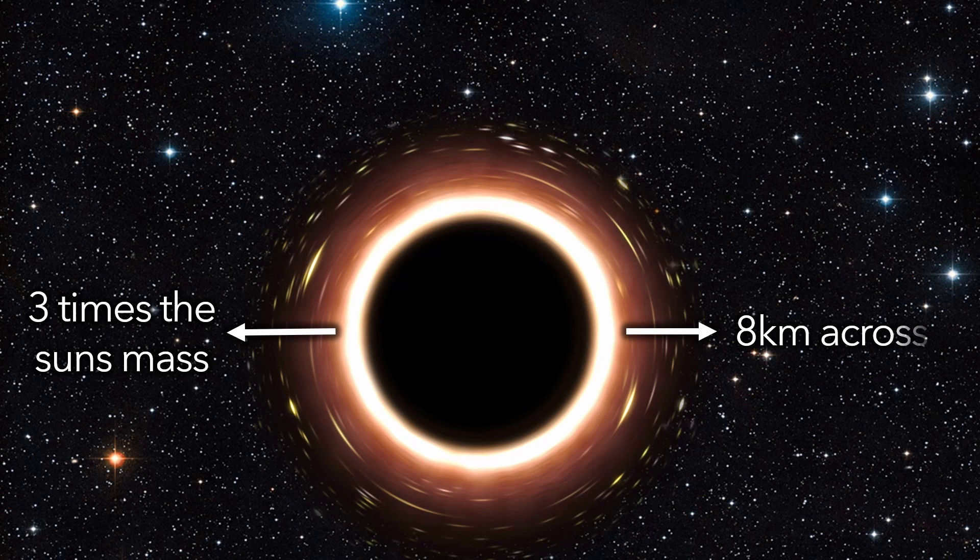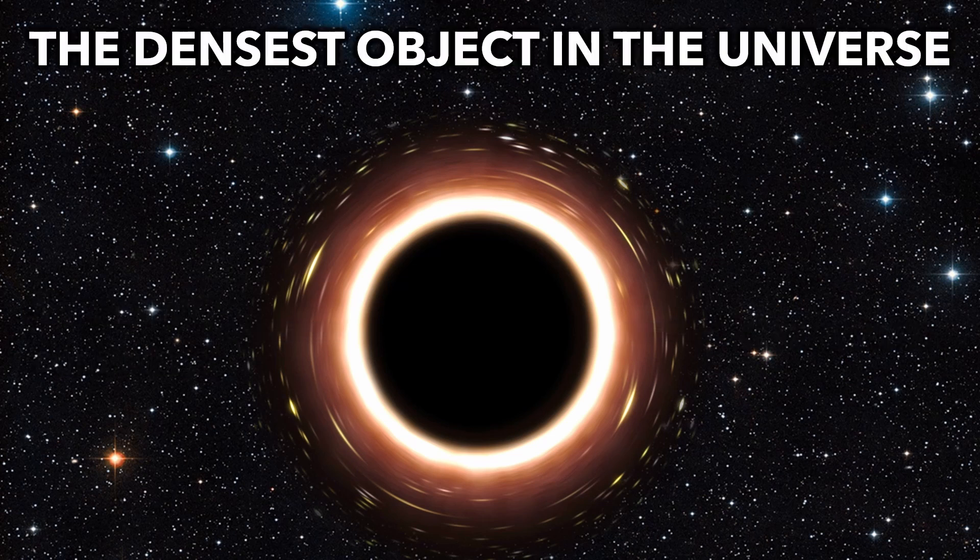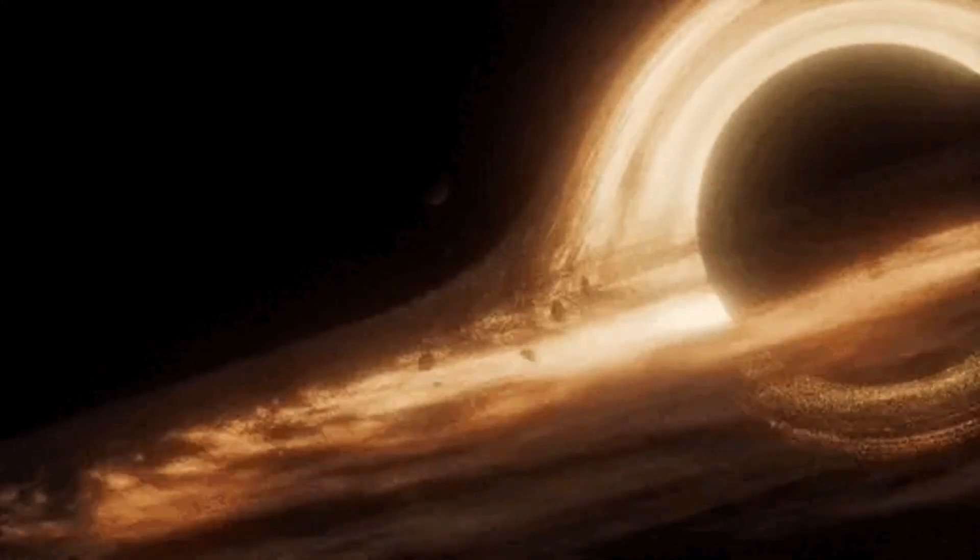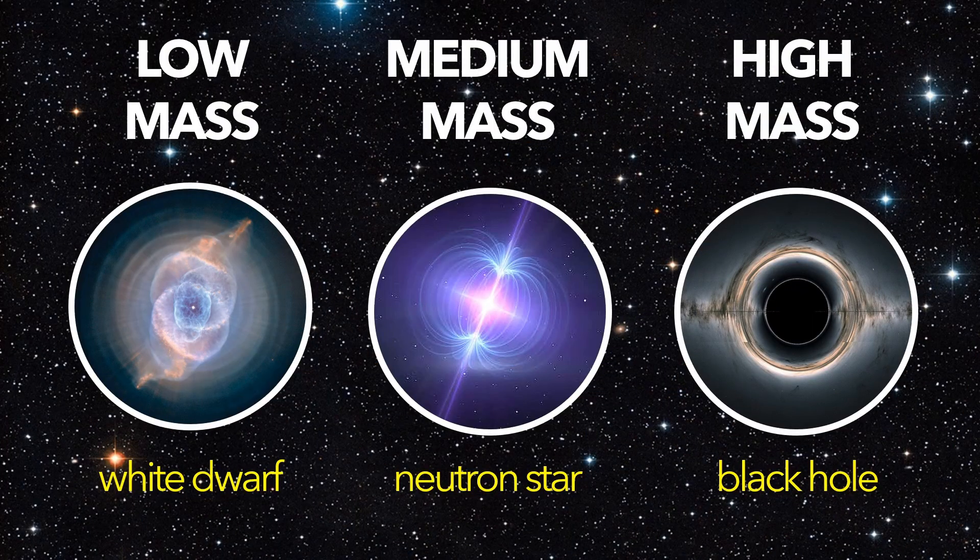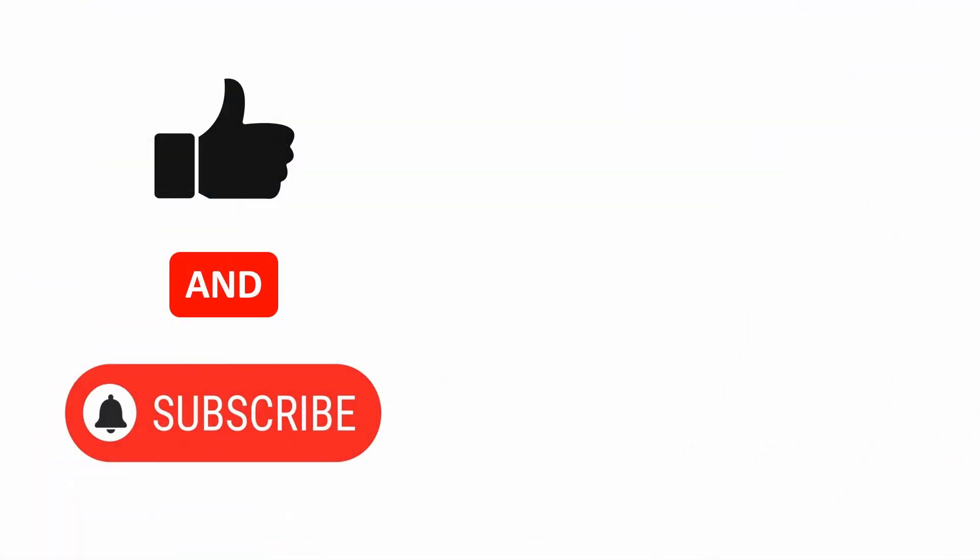With three solar masses packed into an eight kilometre ball, they are the densest objects in the universe. So these are the three possible ways a star can die. Please like and subscribe for more content.